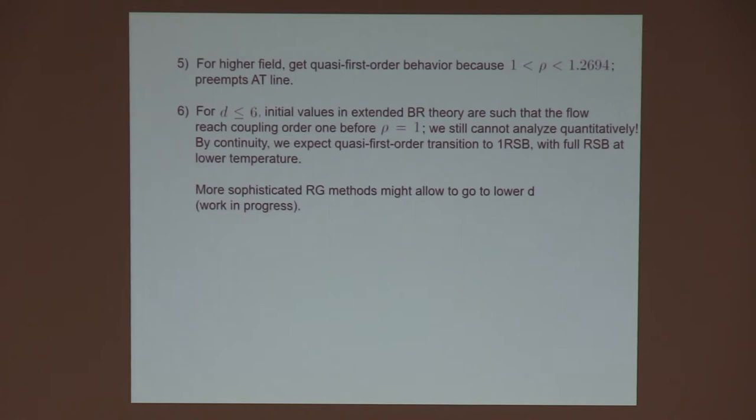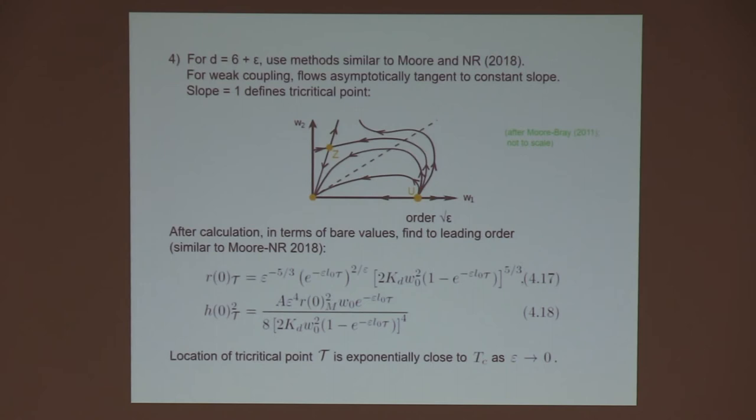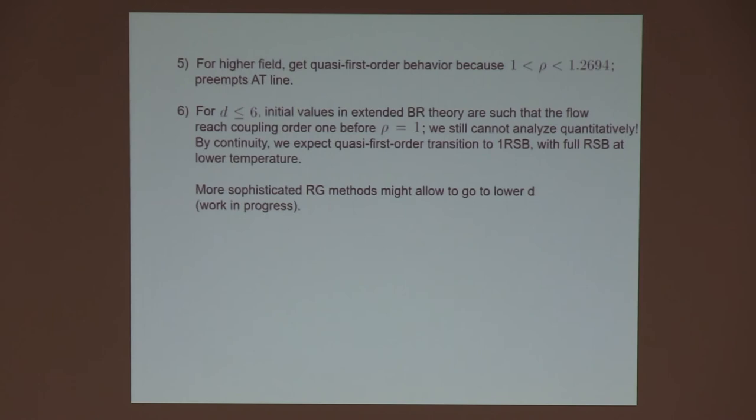Once you hit that point that's the tricritical point. And the location of that using the crossover, you can derive as epsilon goes to zero where that is in temperature and magnetic field in terms of the bare values. This was again from my paper with Mike Moore. The important thing is the 2 over epsilon in the exponent of this constant which is less than 1. This means that R and H are going to zero exponentially fast as epsilon goes to zero. To leading order this is exactly the same as the other multi-critical point that we had in that paper. So the location of the tricritical point that we find now is exponentially small as epsilon goes to zero.